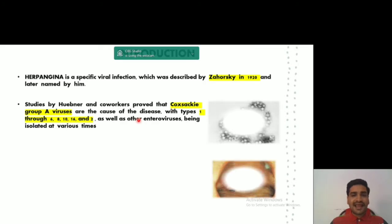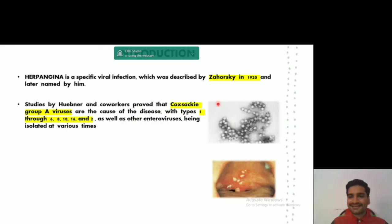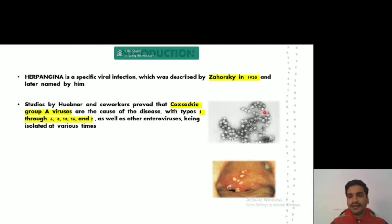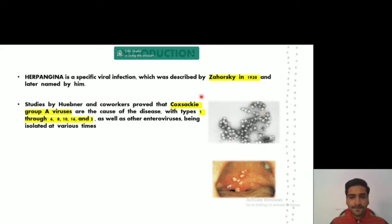Coxsackievirus Group A is an enterovirus, or you can call it a single-stranded RNA virus. It will look somewhat like this in the microscopic section. We are not going to discuss much about the microbiology part.